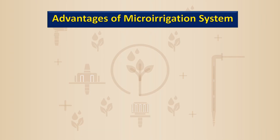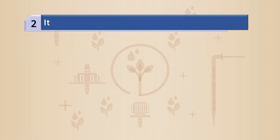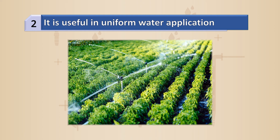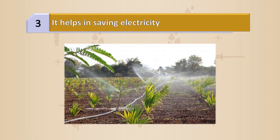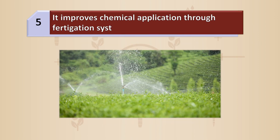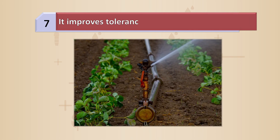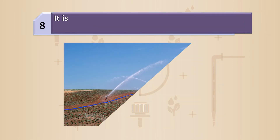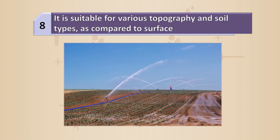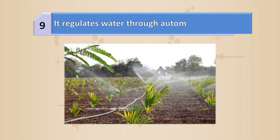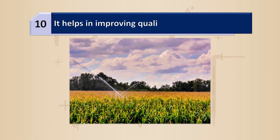The advantages of micro irrigation systems include: saving water, applying uniform water in the field, saving electricity, improving chemical application through the fertigation system, reducing weeds and diseases, improving crop tolerance to soil salinity, suitability for various topography and soil types, regulating water through automated systems, and improving the quality and yield of crops.